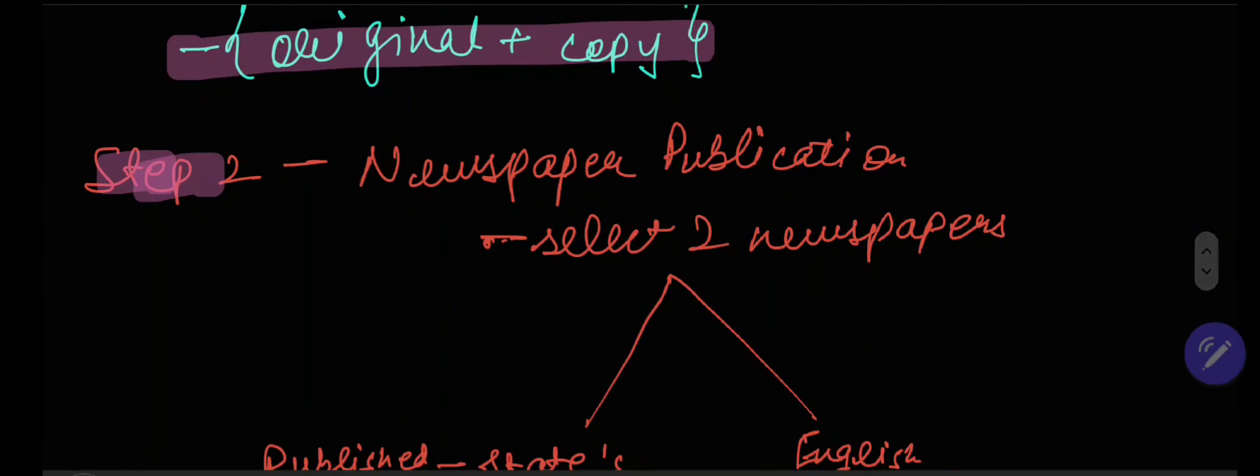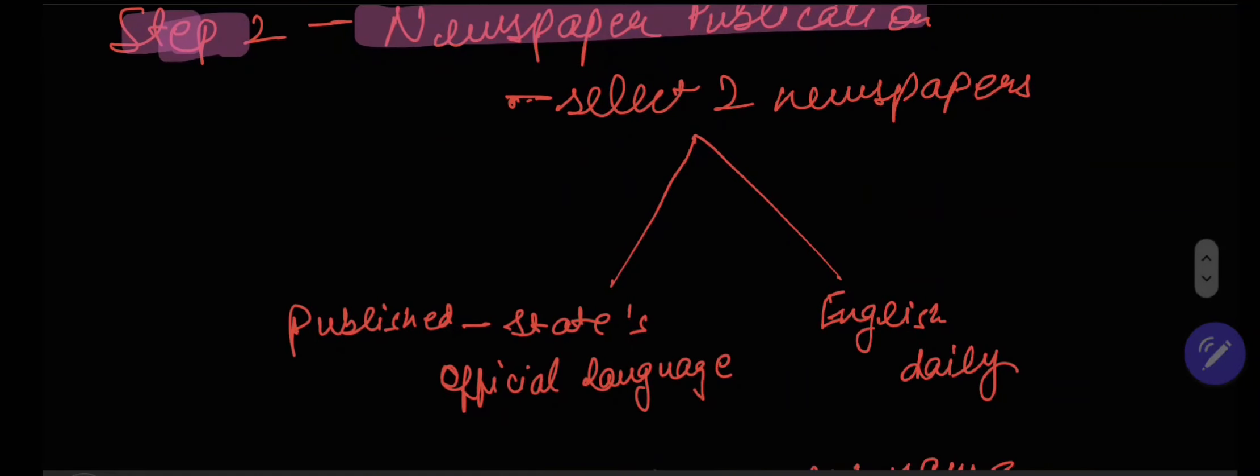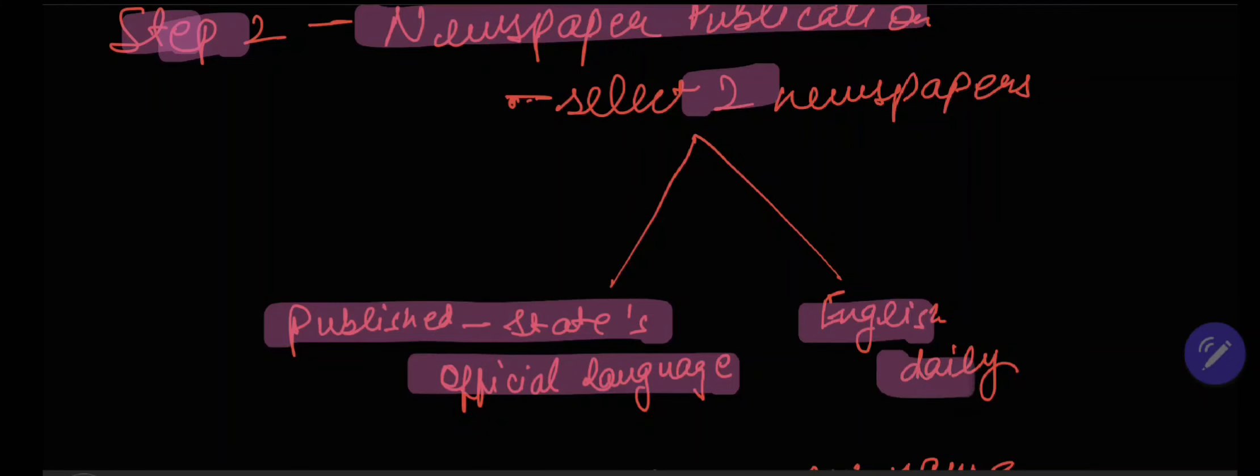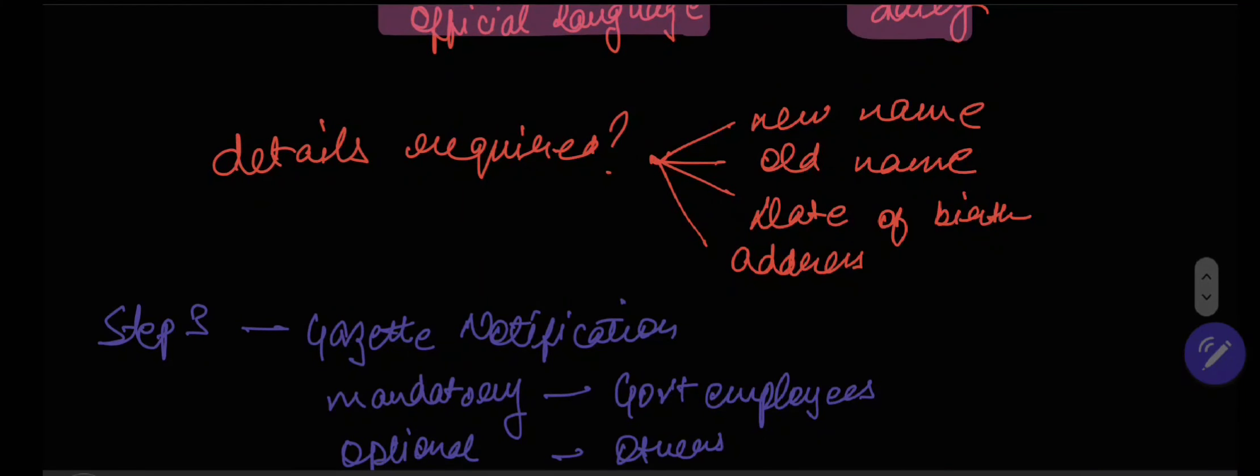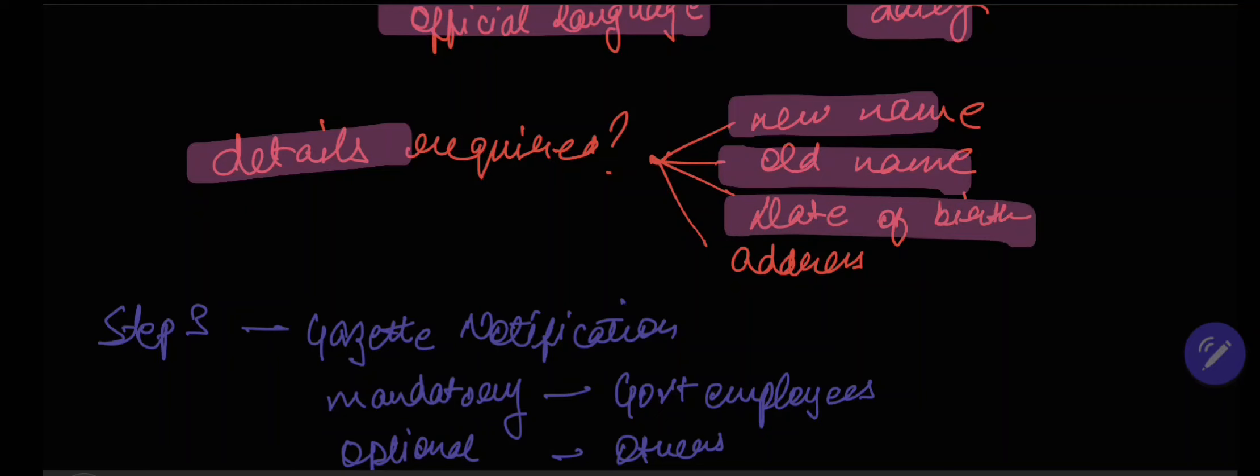The step two, or stage two, includes the newspaper publication. You need to select two newspapers. One has to be published in the state's official language, and the second should be an English daily. What will you publish in the newspaper? The details that need to be published include your new name, your old name, your date of birth, and your address.